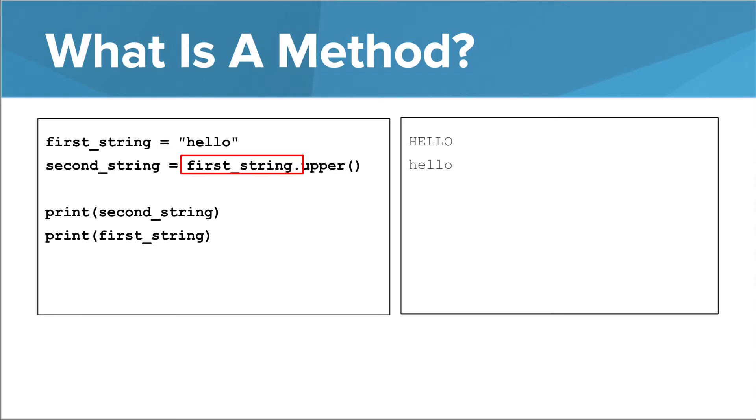A method call always takes the form something.method_name. You can think of the thing to the left of the dot as a secret argument. Methods are related to object-oriented programming, something you'll learn more about in a later module.